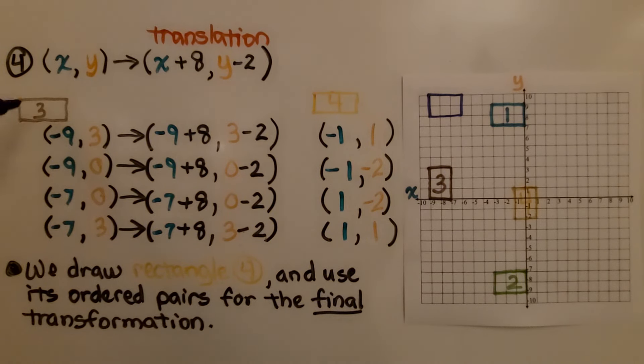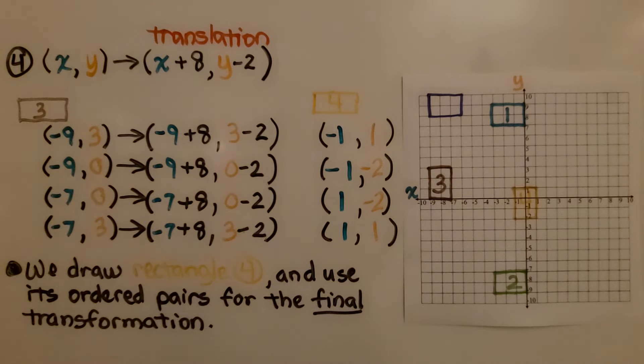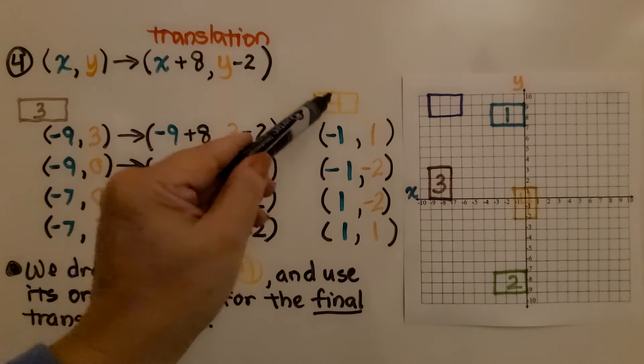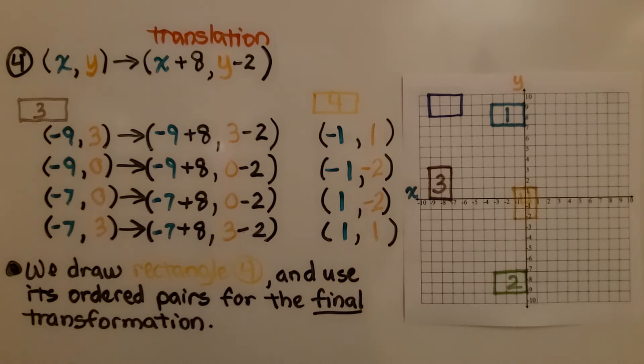We take the ordered pairs from our third transformation, and we have them written here. We know that these are the x values, these are the y values, and we're going to add 8 to every x value, and we're going to subtract 2 from every y value, and we get the ordered pairs for our fourth transformation, our translation. We plot them, connect the vertices with line segments. We draw the rectangle number 4, and use its ordered pairs for the final transformation.